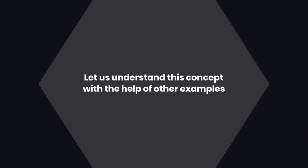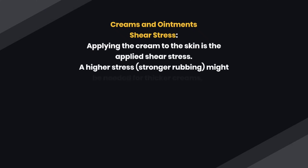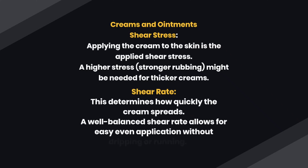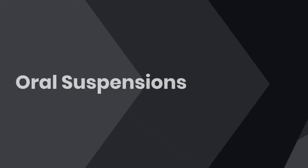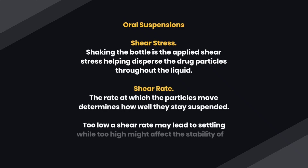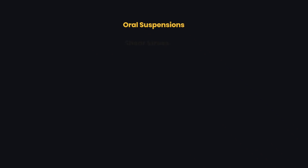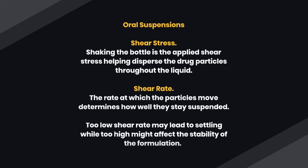Let us understand these concepts with further examples. For creams and ointments: shear stress is the force of applying the cream to the skin, where stronger rubbing may be needed for thicker creams. Shear rate determines how quickly the cream spreads — a well-balanced shear rate allows for easy, even application without dripping or running. For oral suspensions: shaking the bottle is the applied shear stress, helping disperse drug particles throughout the liquid. The shear rate determines how well they stay suspended — too low a shear rate may lead to settling, while too high might affect formulation stability.